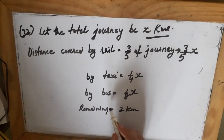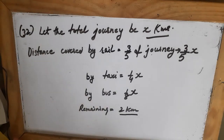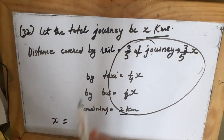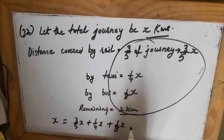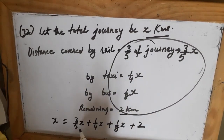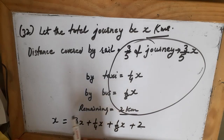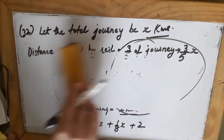The total journey x equals the distance covered by all sources: (3/5)x plus (1/4)x plus (1/8)x plus 2. Bringing x terms to one side: x minus (3/5)x minus (1/4)x minus (1/8)x equals 2. This becomes my equation and you solve it.